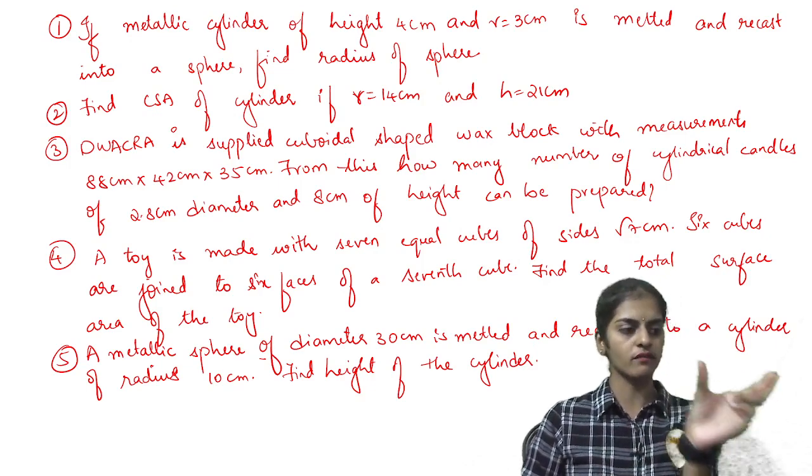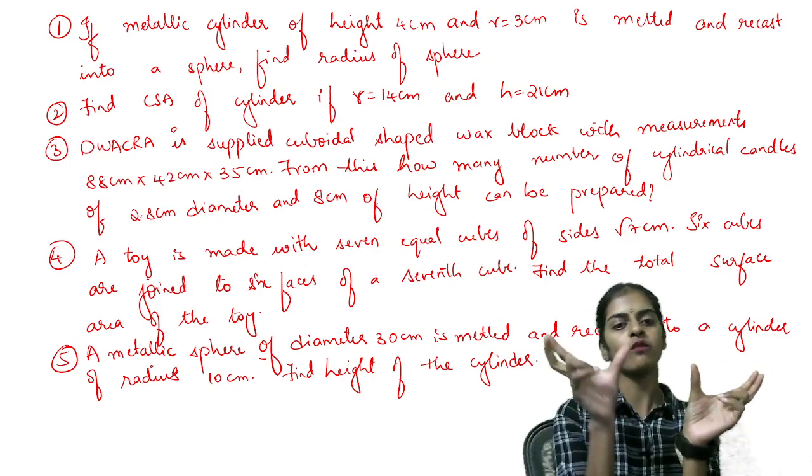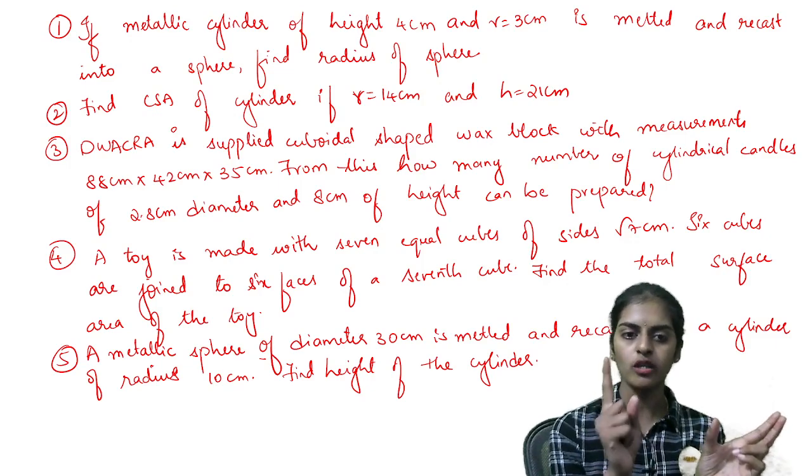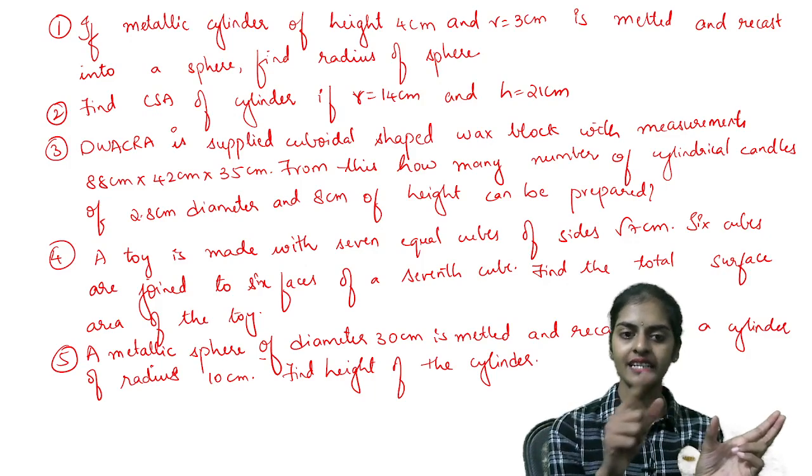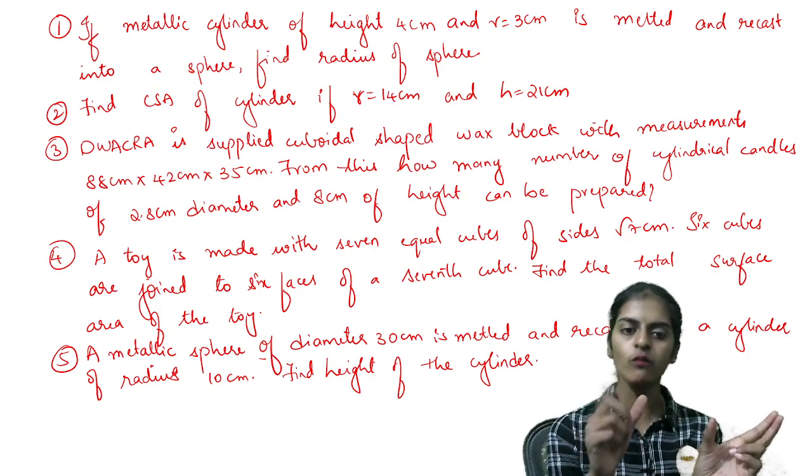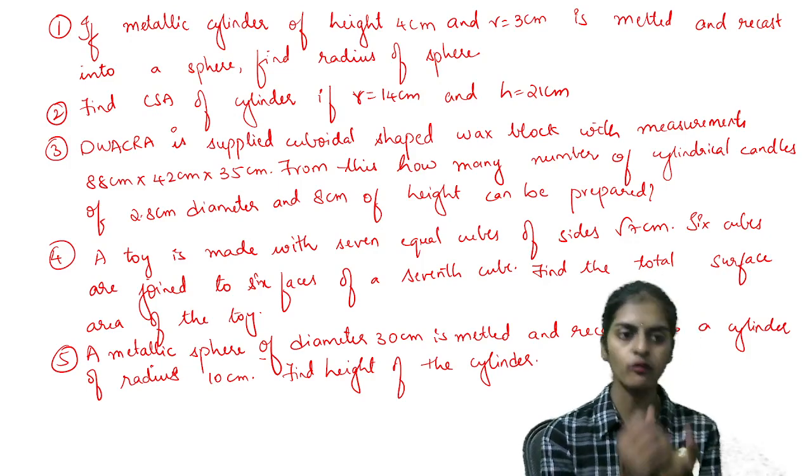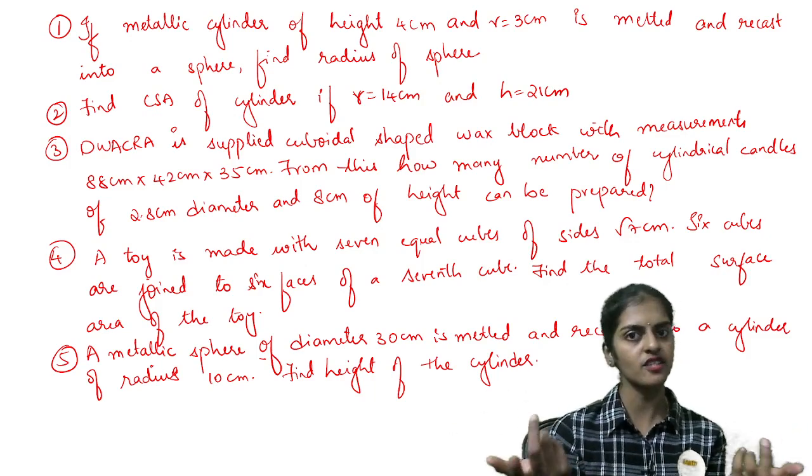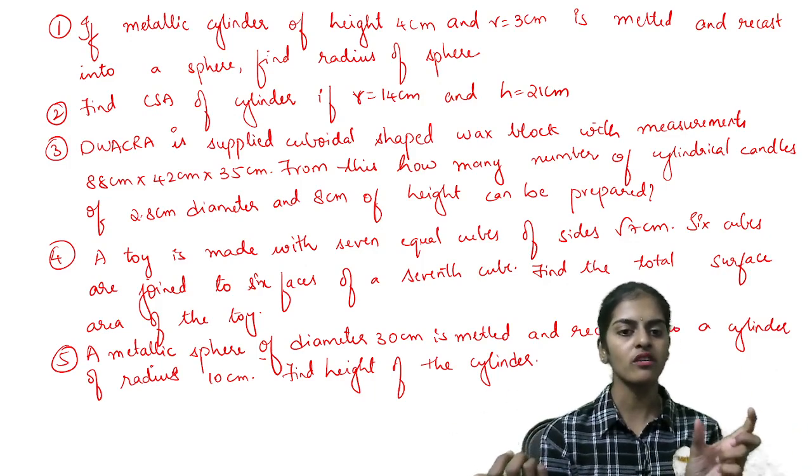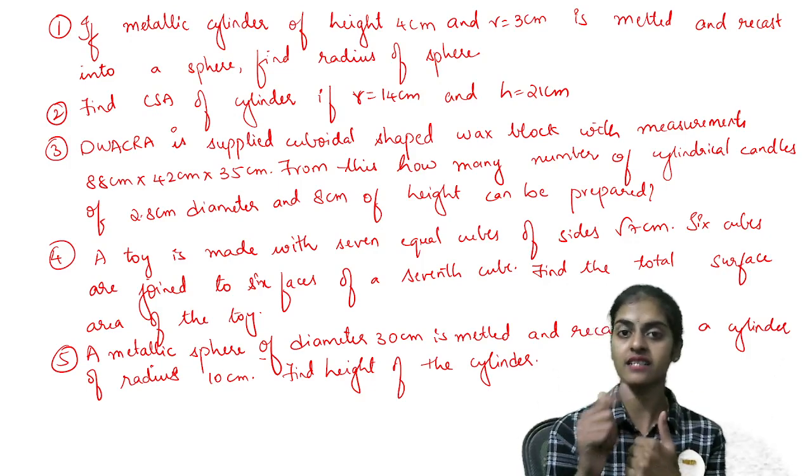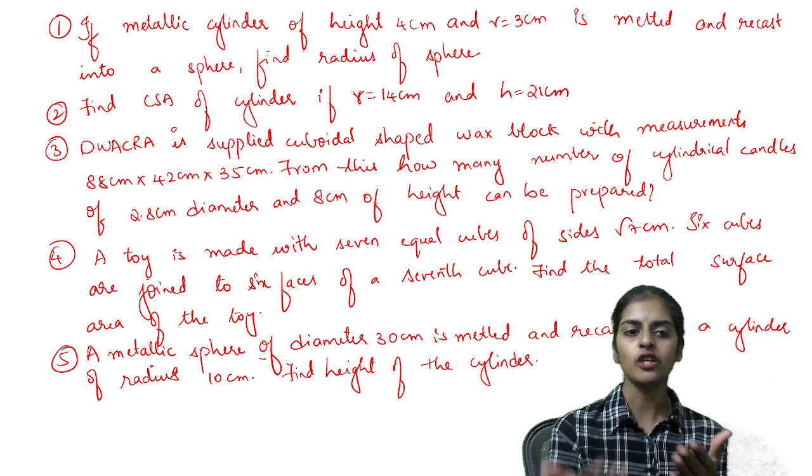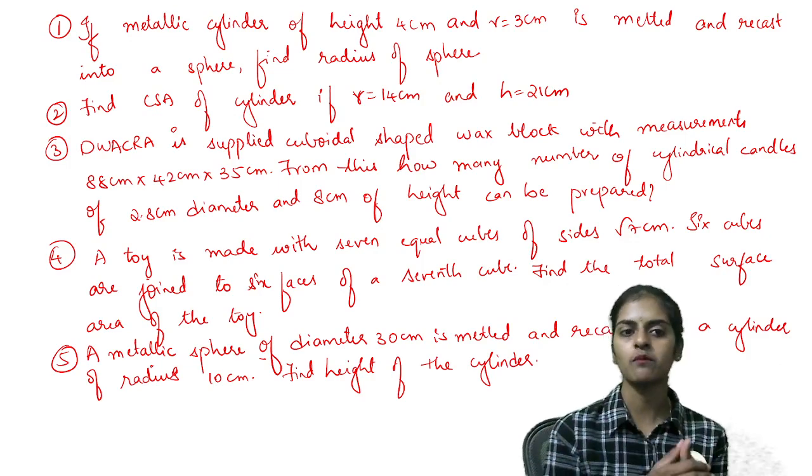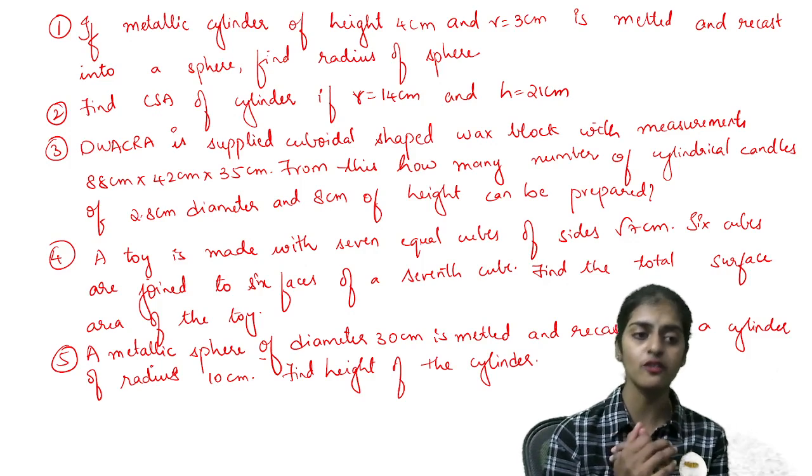Volume of this cuboid box equals volume of the entire candles, all the candles together. If you can find volume of one candle, volume of all the candles is N times volume of one candle, where N is the number of candles. Volume of cuboidal box equals N into volume of each candle. Candle is in the shape of a cylinder. So volume is LBH equals N into πR²H. Radius is given, height is given, so you can find the number of candles from this equation. Please try to solve it.